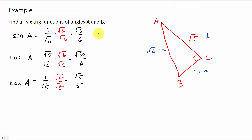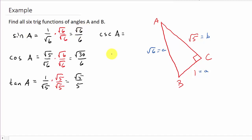Now we need to find cosecant A. Remember, cosecant is the reciprocal of sine. So if you flip sine, you get cosecant. Now, 1 over square root of 6 is the same thing as square root of 6 over 6 — they're the same thing, it's just that the radical is not in the denominator anymore. So instead of flipping the rationalized form, I'm going to flip this one. So that's square root of 6 over 1, which is square root of 6.